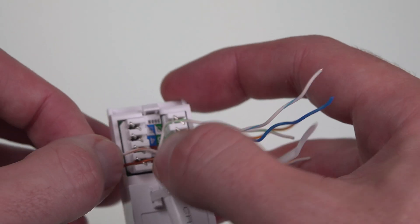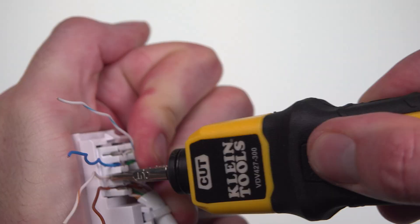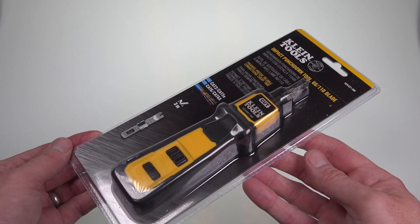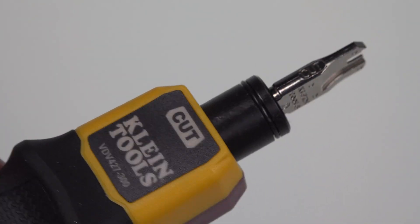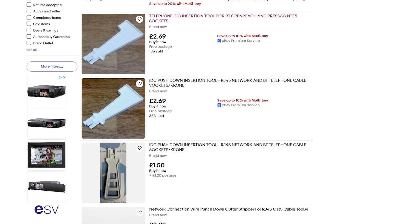Over the years, I've wired up lots of network sockets with keystone jacks that have always required you to use a punch-down tool, either a fancy one with built-in cutter like this, or one of these more basic mini ones.